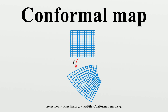An important family of examples of conformal maps comes from complex analysis. If U is an open subset of the complex plane, then a function F: U is conformal if and only if it is holomorphic and its derivative is everywhere non-zero on U.